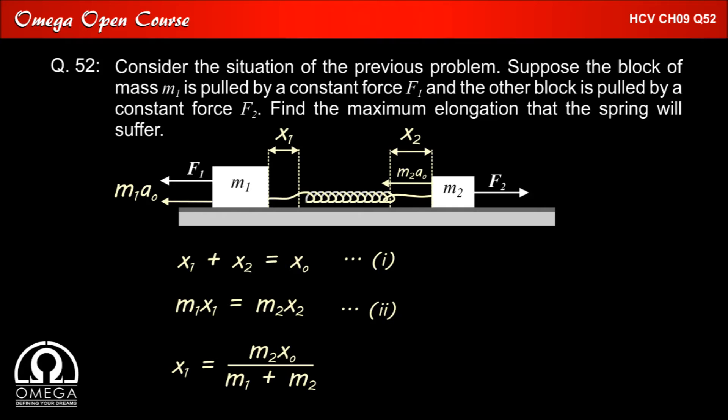Solving these two equations we get x1 is equal to M2 x0 divided by M1 plus M2 and x2 is equal to M1 x0 divided by M1 plus M2.